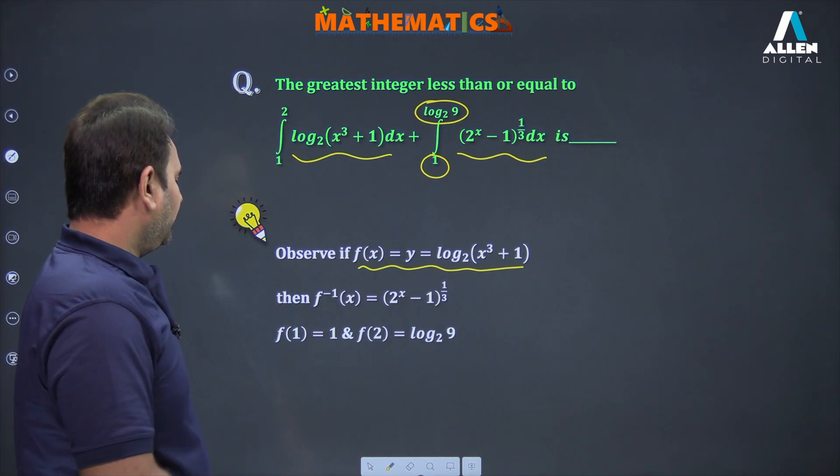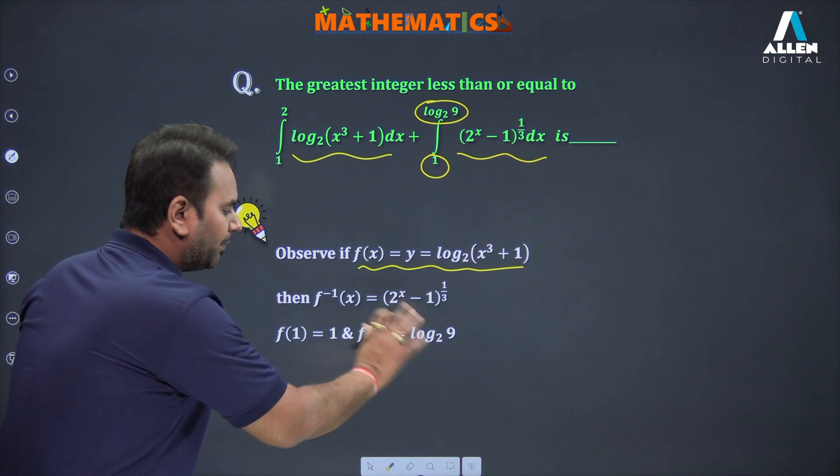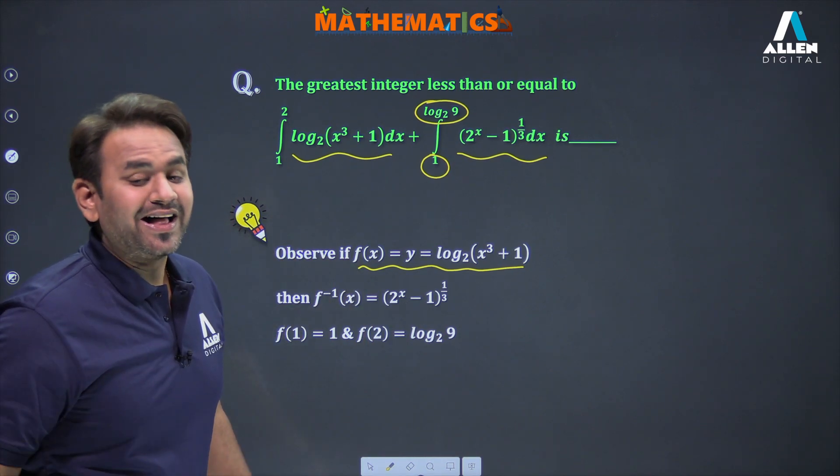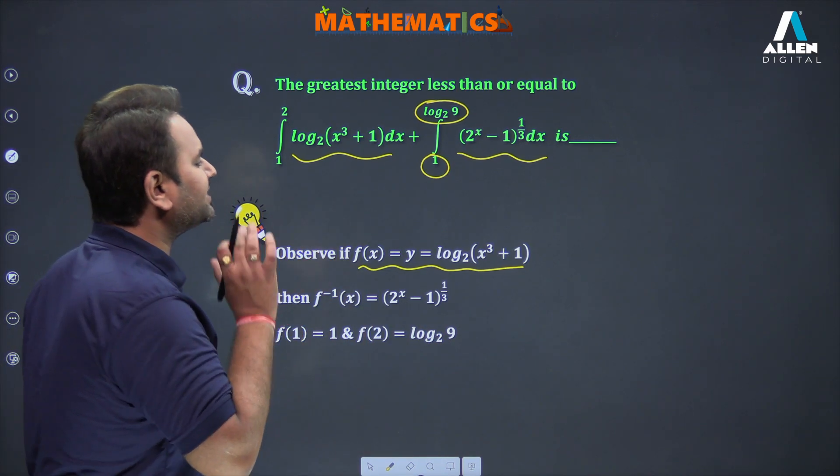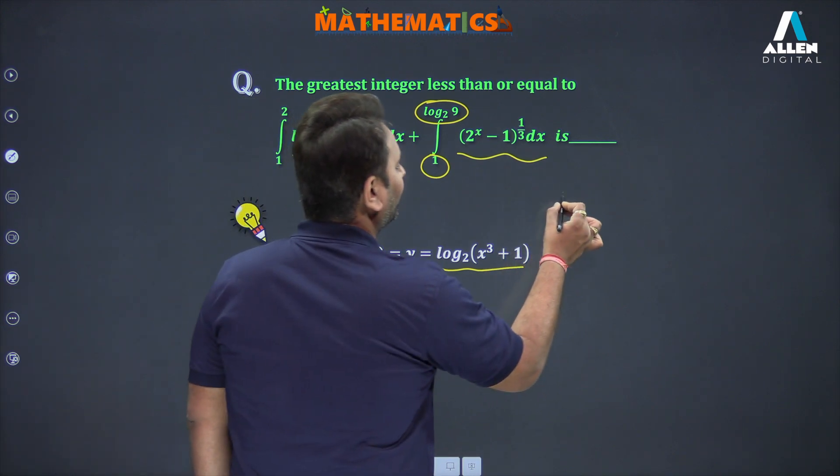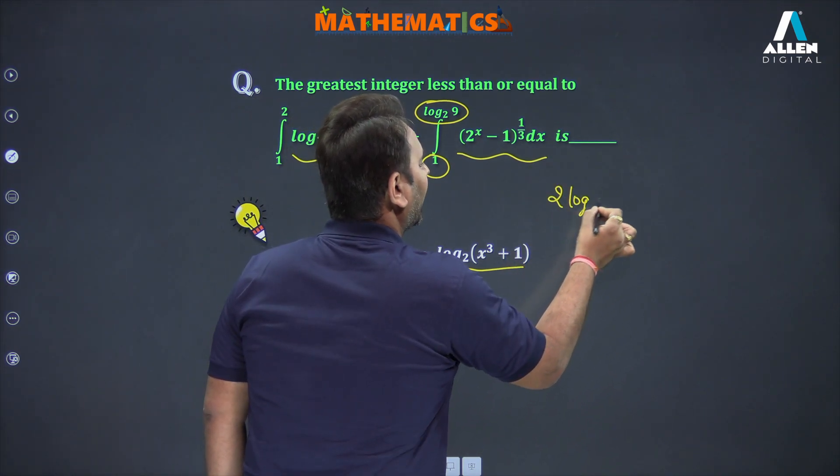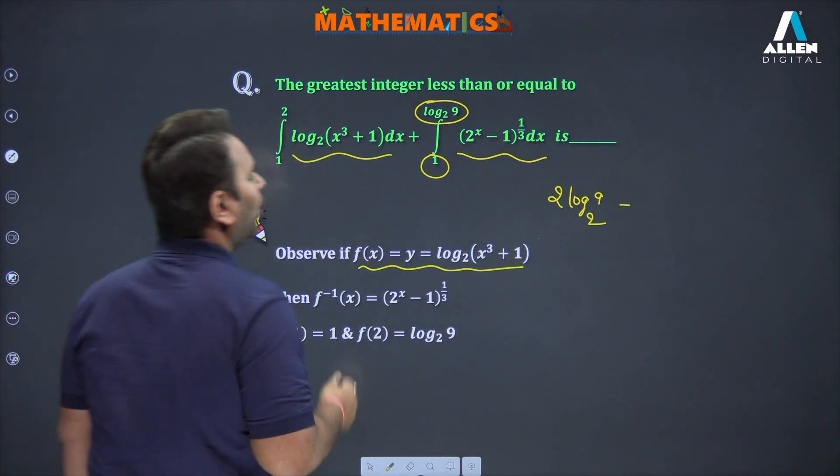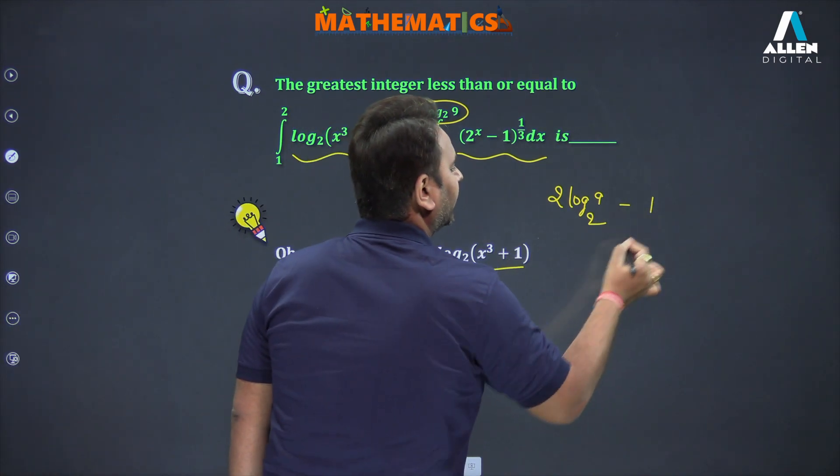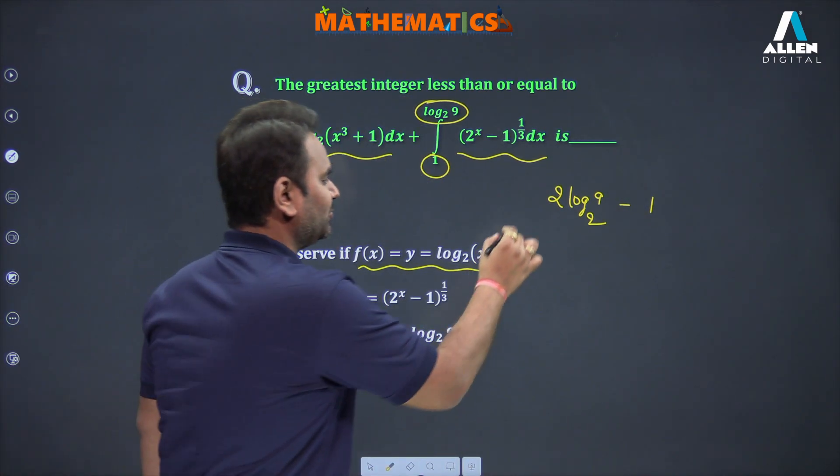If I want to see the answer, f(1) equals 1 and f(2) equals log 9 to the base 2. So how do we find the answer? Upper limits multiplied: twice log 9 to the base 2, minus lower limits multiplied, which is 1.